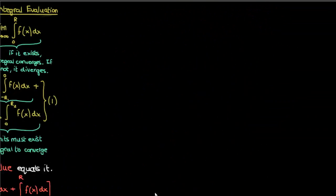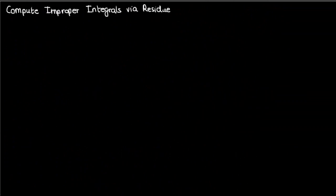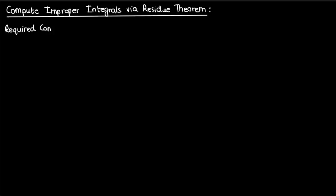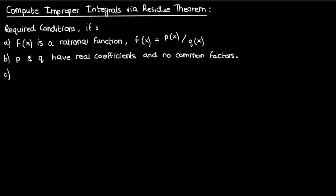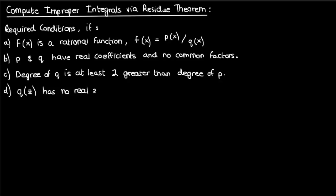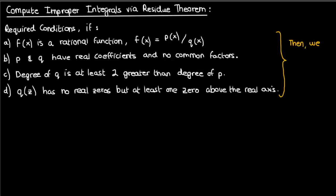That does it for our preamble. Now it's time to get to the fun part — how do we compute improper integrals via the residue theorem? We'll start with four assumptions. Suppose f of x is a rational function, the ratio of two polynomials p and q, with real coefficients and no common factors. Suppose the degree of q is at least two greater than the degree of p. And finally suppose that q of z has no real zeros but at least one zero above the real axis. If all four conditions hold, we can use a special technique to evaluate the improper integral of f of x over an infinite interval.